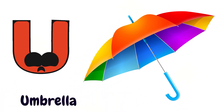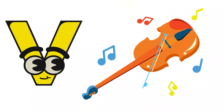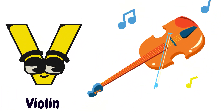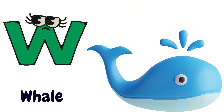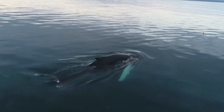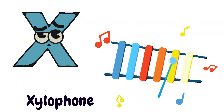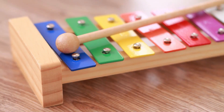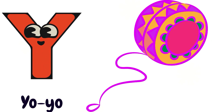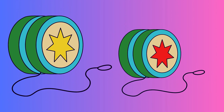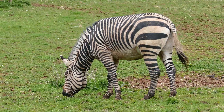U is for Umbrella. A, A, A, A, Umbrella. V is for Violin. B, B, B, B, B, Violin. W is for Whale. B, B, B, B, B, Whale. X is for Xylophone. Z, Z, Z, Z, Z, Xylophone. Y is for Yo-yo. Yo, O, O, O, O, Yo, Yo. Z is for Zebra. Z, Z, Z, Z, Zebra.